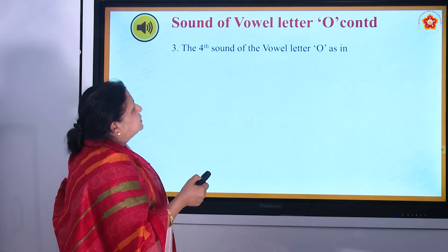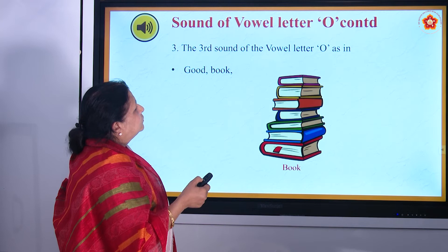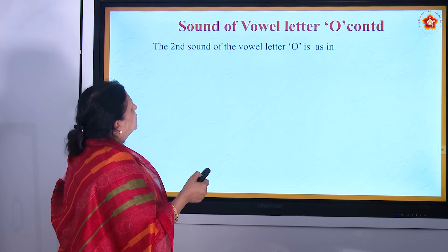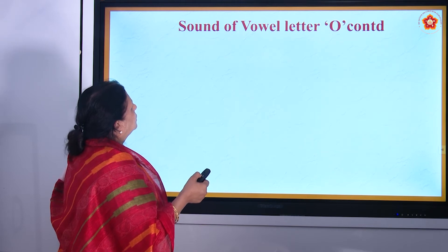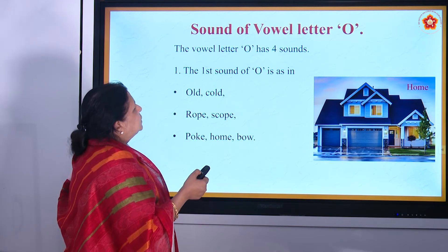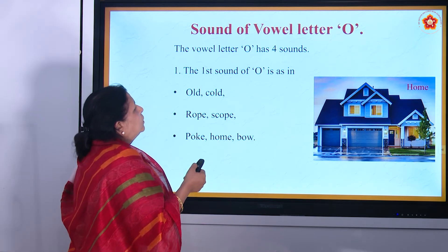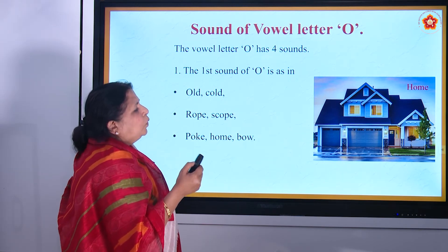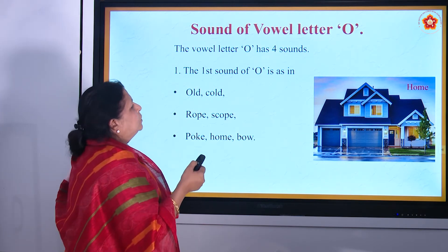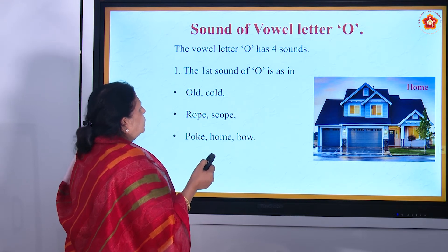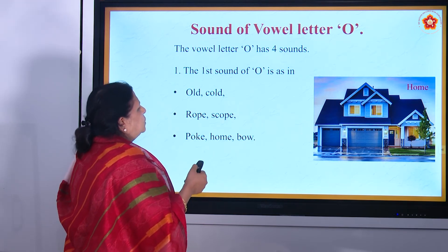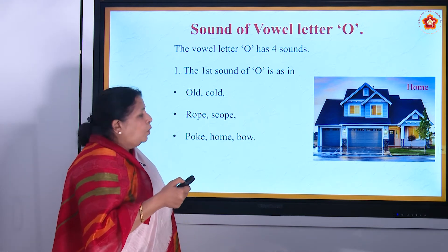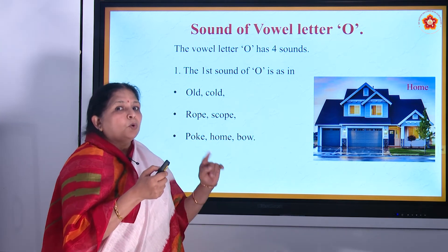The first sound of O is as in 'old' — O, L, D — old, cold, rope, scope, poke, home, bow. So it is the O sound as in old.